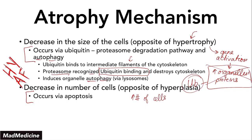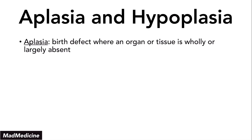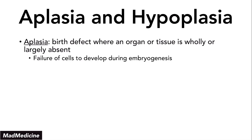There is a mechanism related to atrophy I want to make sure you're aware of: aplasia and hypoplasia. Aplasia is a birth defect where an organ or tissue is wholly or completely absent — it is never formed at the developmental stage. This occurs due to a failure of cells developing during embryogenesis. An example is renal agenesis, where one or both kidneys simply never form.